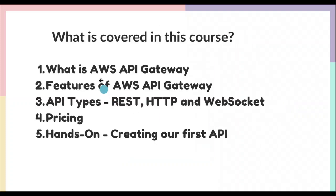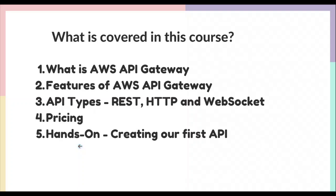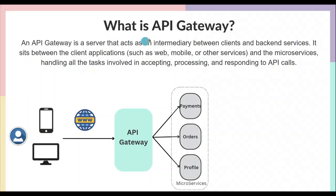Let's see what is covered in this course. First we will discuss what API Gateway is, then we'll see the features of AWS API Gateway. There are three API types we can create — REST, HTTP, and WebSocket — and we are going to discuss and compare these three. Then we'll see the pricing model, and finally do some hands-on to create our first REST API using AWS API Gateway.